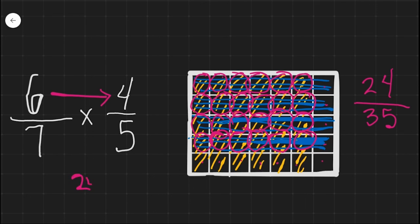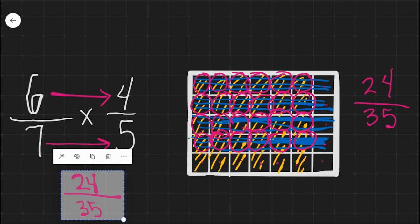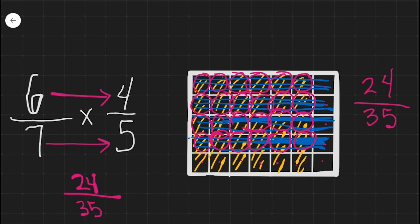Now if we come back here and we multiply six times four, we get twenty-four. If we multiply seven times five, we get thirty-five. So six-sevenths times four-fifths equals twenty-four thirty-fifths. Thanks for joining me.